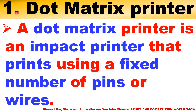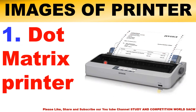First, dot matrix printer. A dot matrix printer is an impact printer that prints using a fixed number of pins or wires. This is the image of a dot matrix printer. You can take a print-out from this printer also.